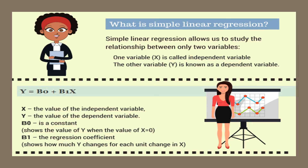Simple linear regression allows us to study the relationship between only two variables — x and y. One variable, x, is called the independent variable, and the other variable, y, is the dependent variable. The simple linear regression equation is: y = b0 + b1 times x. In this equation, x is the value of the independent variable, y is the value of the dependent variable, b0 is a constant showing the value of y when x is 0, and b1 is the regression coefficient showing how much y changes for each unit change in x.